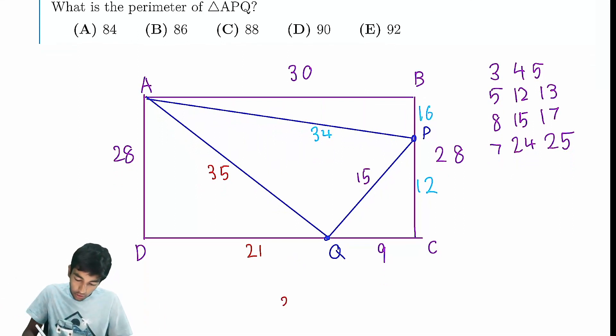The perimeter of triangle APQ is 35 plus 34 plus 15. That's 84. And that is our answer.